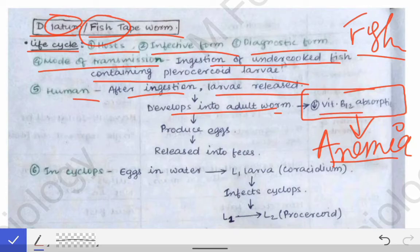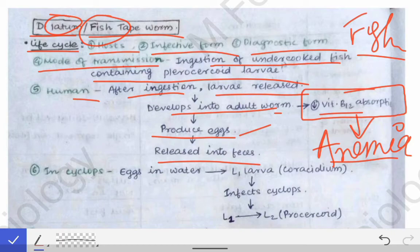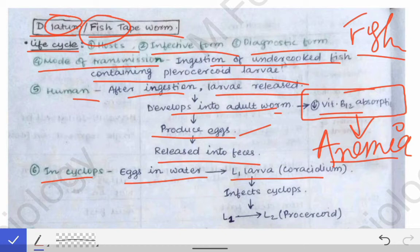As the adult worm forms, it produces eggs. Cestodes are monoecious, meaning both male and female sex organs are present in the same organism, so by self-fertilization it produces eggs. Those eggs are released into water bodies, where the L1 larva — called the coracidium — forms in the water itself.